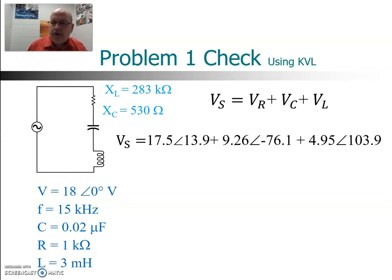17.5∠13.9°, that's the voltage across the resistor. Voltage across the capacitor, 9.26∠-76.1°. And the inductance has a voltage of 4.95∠103.9°. Add those up in your calculator and you should get 18.0 or something very close to that. So you're going to see that the sum of the voltage drops is approximately equal to the source voltage. And if it's not exactly equal, it's just because of a little bit of rounding error. In fact, the Kirchhoff's voltage law does in fact work here if you don't have any rounding error.